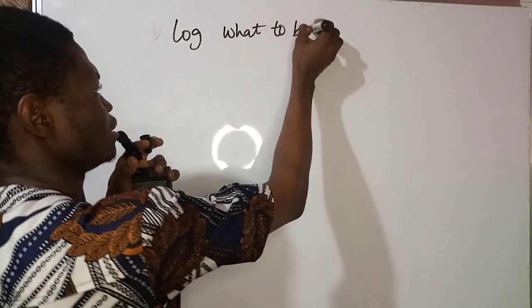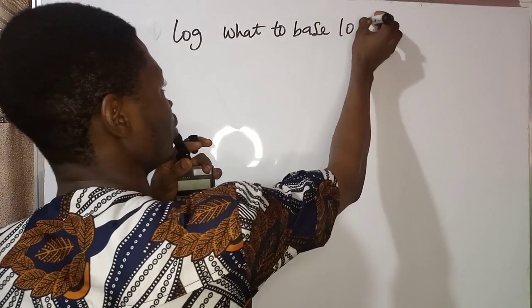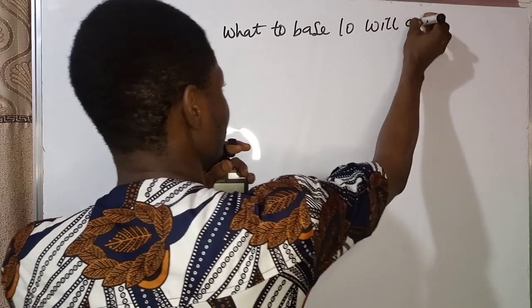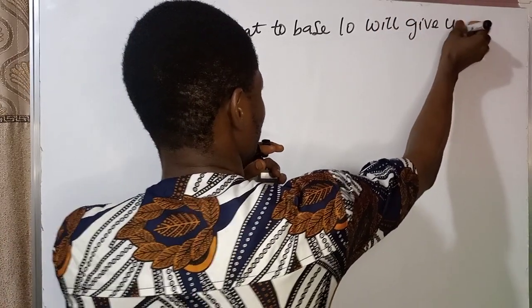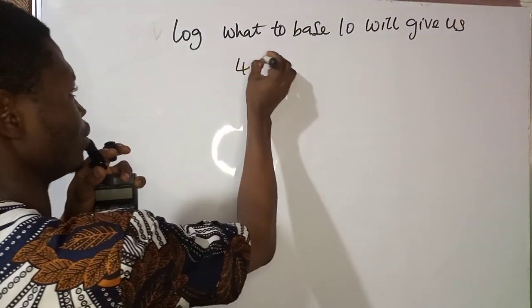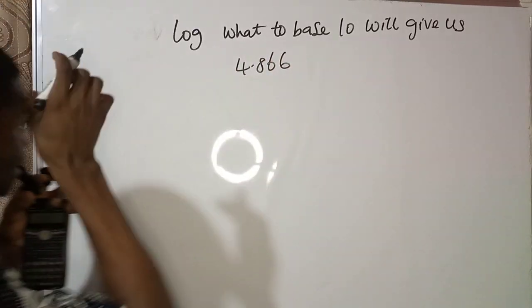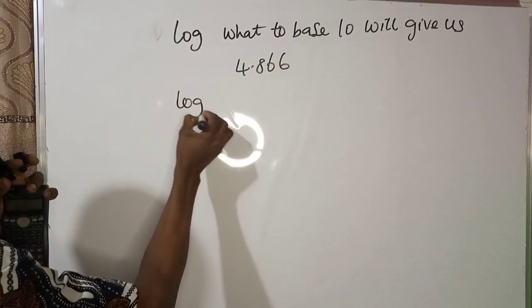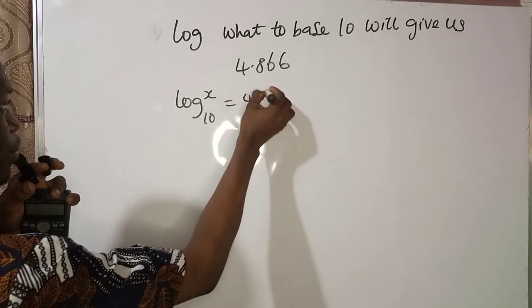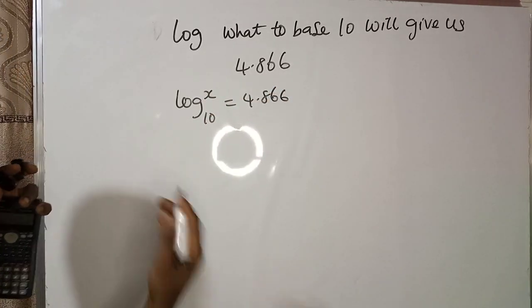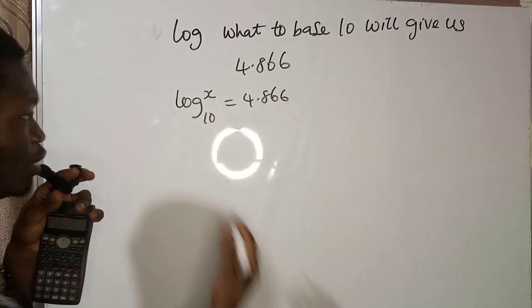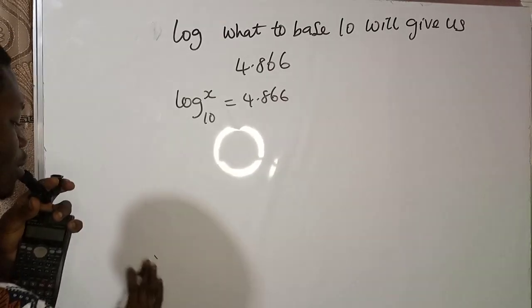to base 10 will give us 4.866. So we have log₁₀(x) = 4.866. This is simple. Just use the law of logarithms. You are going to